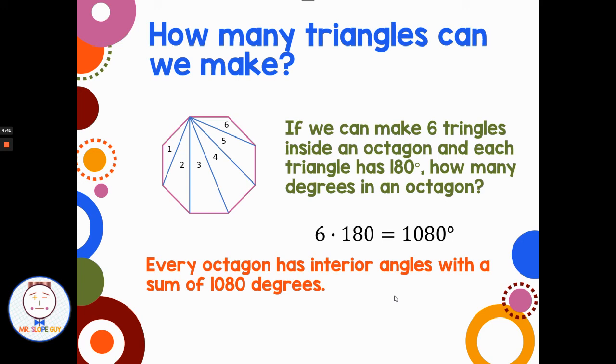So that's kind of a useful way without memorizing a lot, just to see how many triangles we can draw inside a polygon, knowing that the inside angles of every triangle always add up to 180 degrees, and then we could figure out different other polygons and what their angles add up to as well.